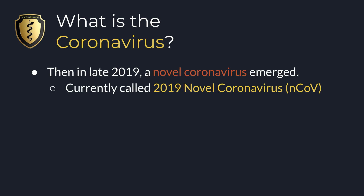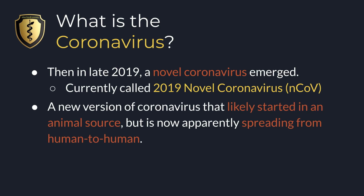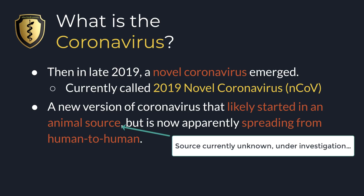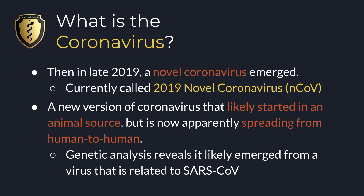In late 2019, a novel coronavirus emerged — novel meaning new or unique. This is a new type of coronavirus that has not been previously identified, which is one of the big reasons it's so widely discussed in the media. This new virus is currently called the 2019 Novel Coronavirus. Genetic analysis has revealed that it likely emerged from a virus genetically related to SARS. It's not a new form of SARS, but it's somewhat genetically related according to officials.